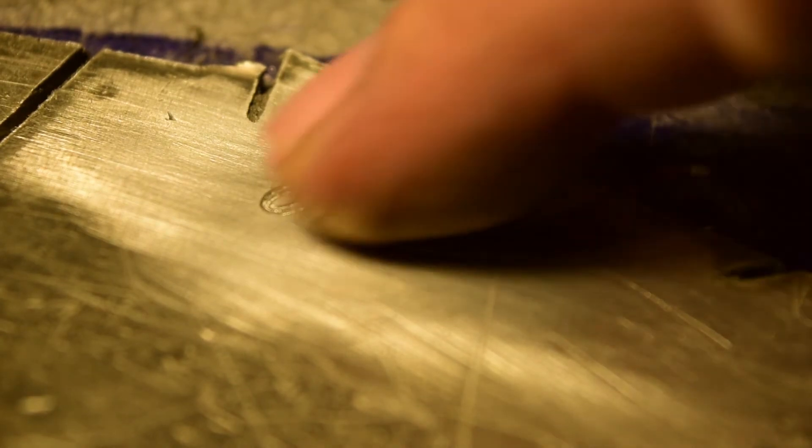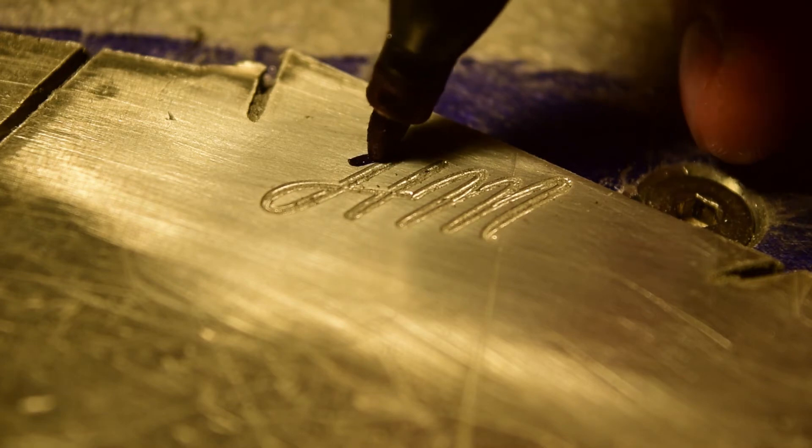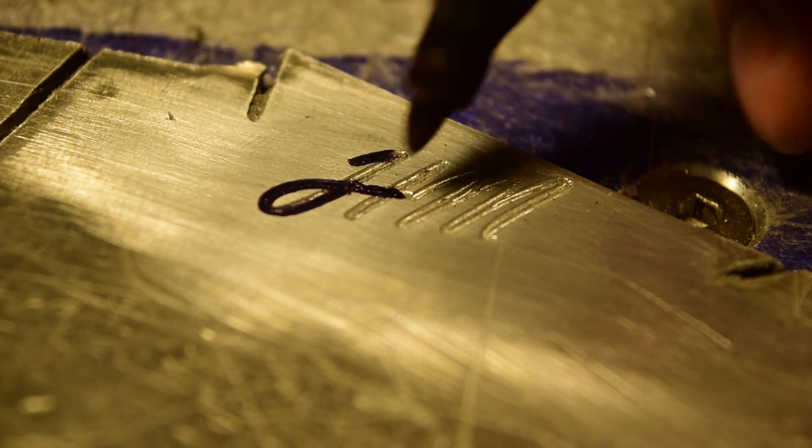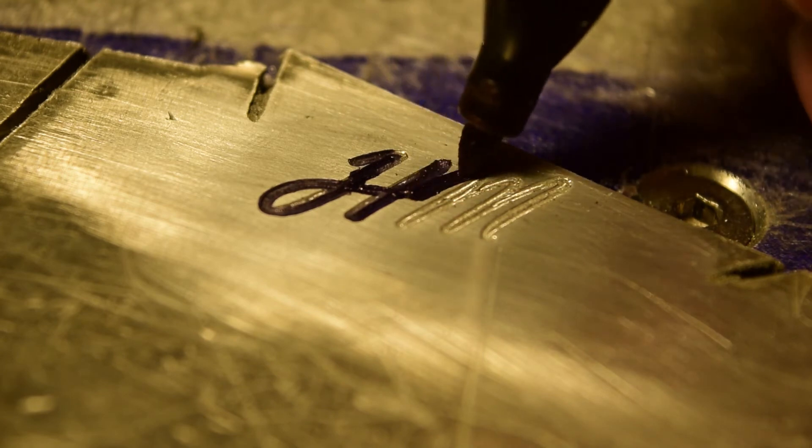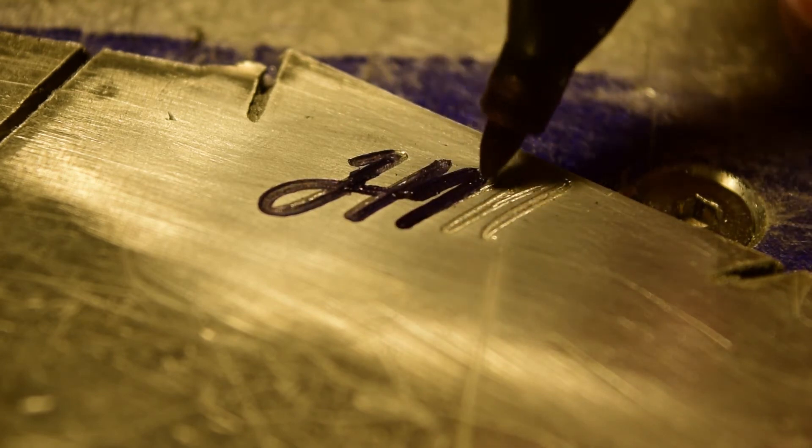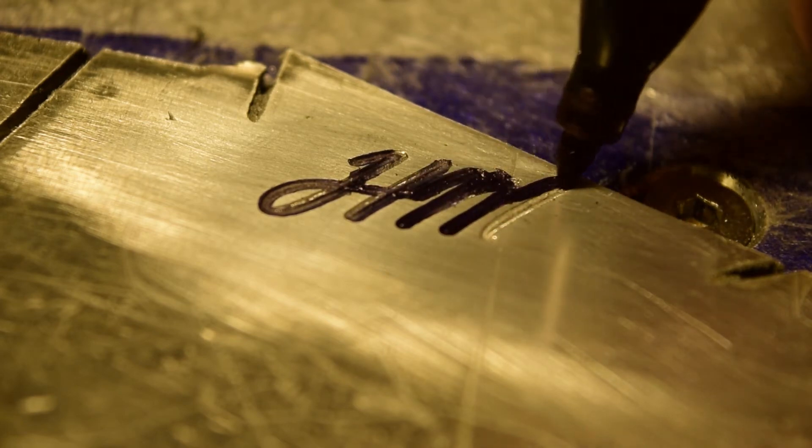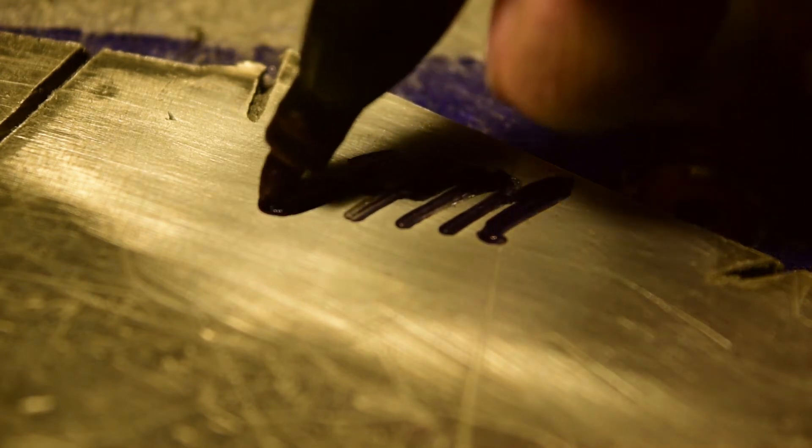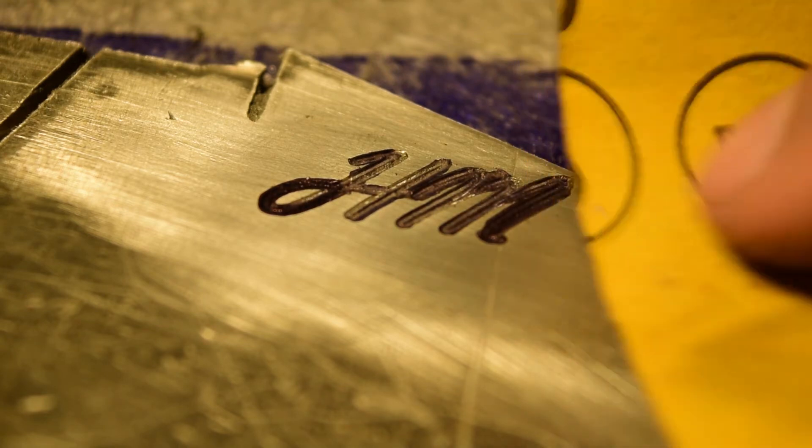See what happens when we put some of this black marker in there. This is one of those markers branded Milwaukee, but it's just a Sharpie basically, supposed to be resistant to oil. I don't know who HM is. I presume that stands for Her Majesty. I do believe this friend is making this for a lady friend of his.